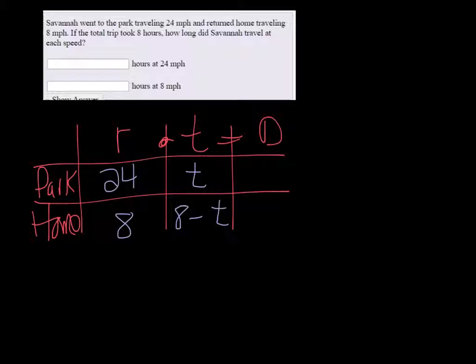For example, if it took her 2 hours to go to the park, then it would take 8 minus 2, which is 6 hours, to go home. So notice that when you add it together, we get back 8, which is what we wanted.